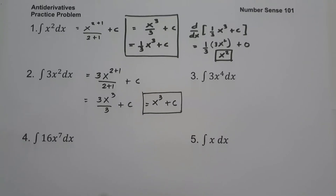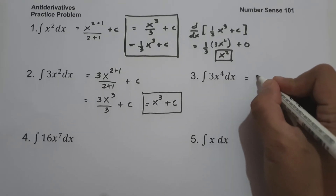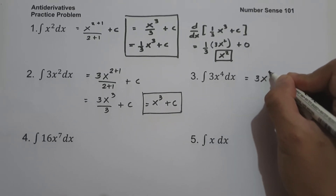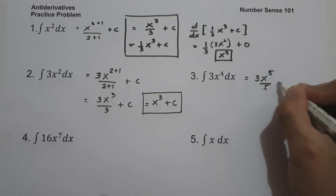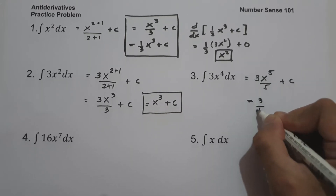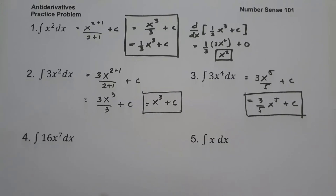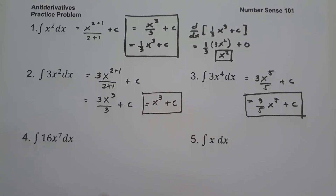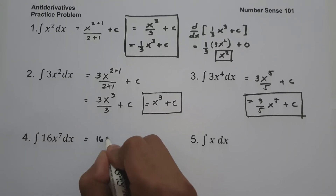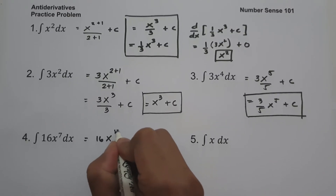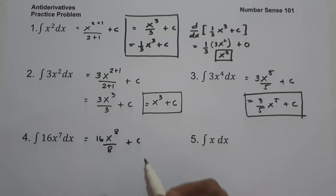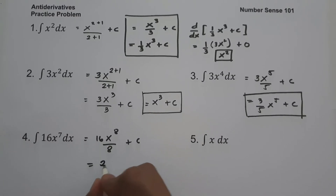On number 3, what is the antiderivative of 3x raised to 4 dx? This will be 3x raised to 4 plus 1, that's 5, over 5 plus c. On number 4, what is the antiderivative of 16x raised to 7 dx? This will be 16 and then x raised to 7 plus 1, that's 8, divided by 8 plus c. Since we can divide 16 by 8, it will give us 2x raised to 8 plus c.